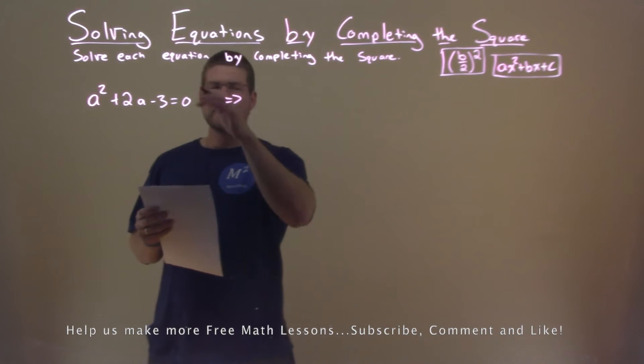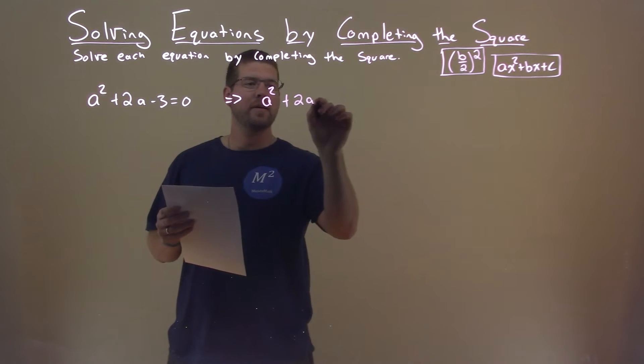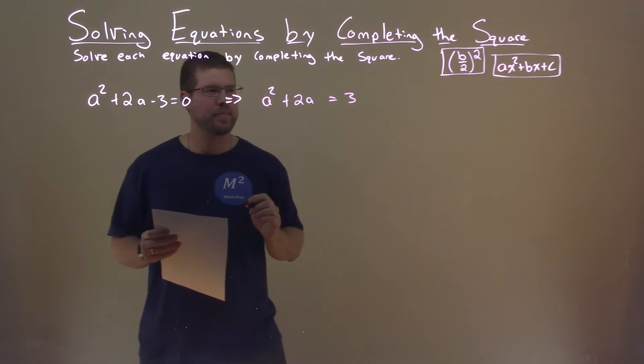First thing I want to do, let's get it in the form of a squared plus 2a, and we're going to add a 3 to both sides. So that equals a positive 3 right there.